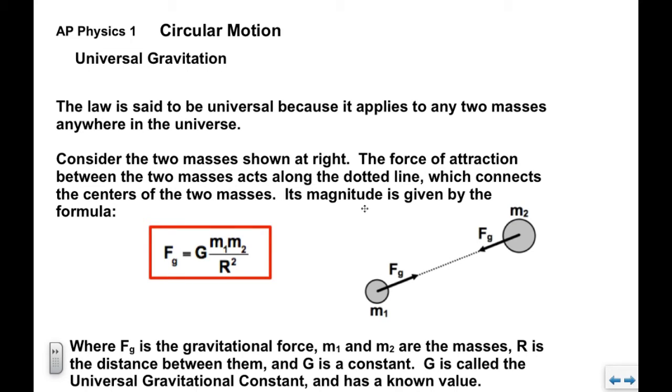If you consider these two masses here, M1 and M2, the force of attraction between them acts along this dotted line that connects the two centers. The magnitude is given by this formula in the red box; it is on your formula sheet. Very simply, Fg equals big G times M1 M2 over R squared. F sub G is the gravitational force. M1 and M2 are the masses of the two objects, R is the distance between them.